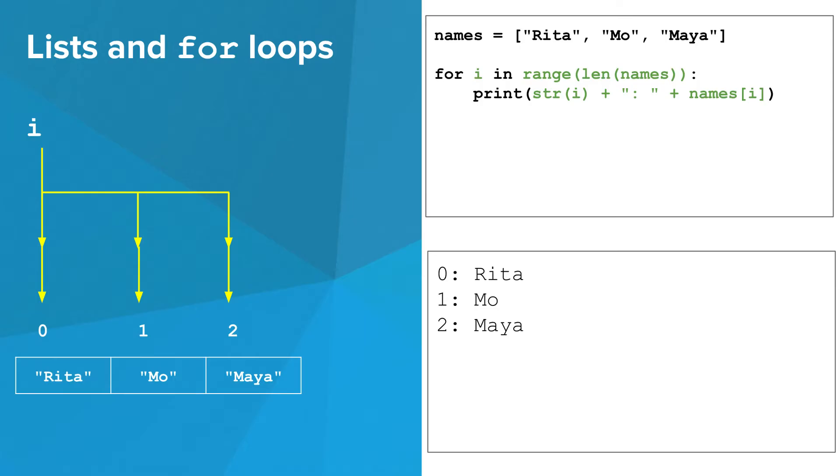We could write a for loop the old-fashioned way, using range, len, and i, but Python actually has a cleaner way to do this. And it's the enumerate function.